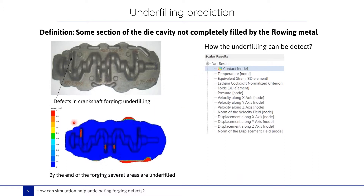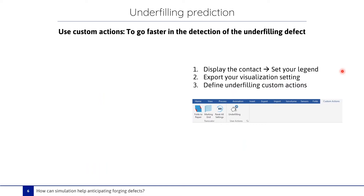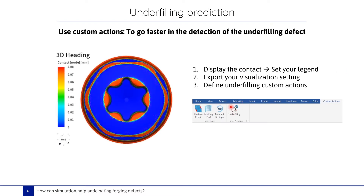By using this scalar, several areas shown in red can be detected as underfilled. Using a cutting plane, it is possible to quantify the underfilling — we can see the distance between the metal and the die cavity. To go faster in the detection of underfilling defects, the custom action feature can be used. This feature is available from version C.1. To create the custom action, you display the contact, then set the legend. Once defined, you can with a single click detect underfilling for any simulation or project.